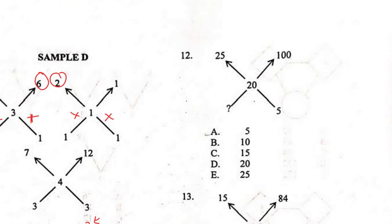For Question 12, we need to find the value that multiplies with 20 to give 100. It has to be 5, since 5 × 20 = 100. Or simply divide: 100 ÷ 20 = 5.